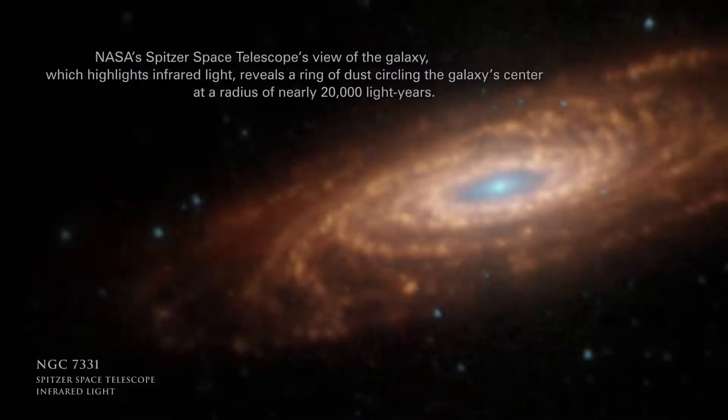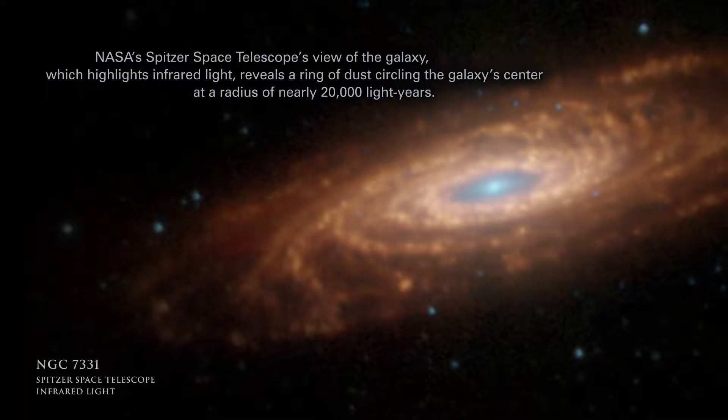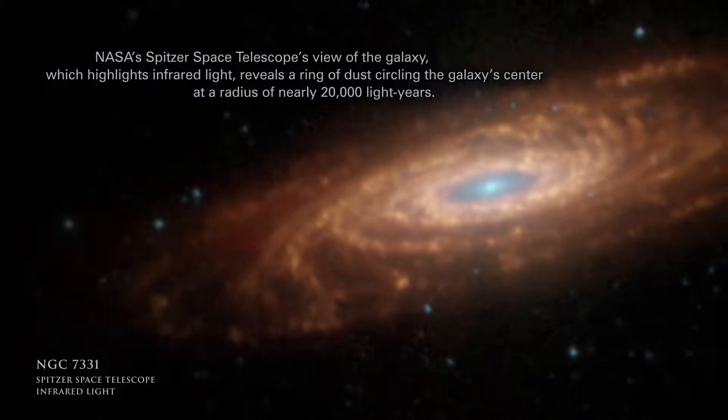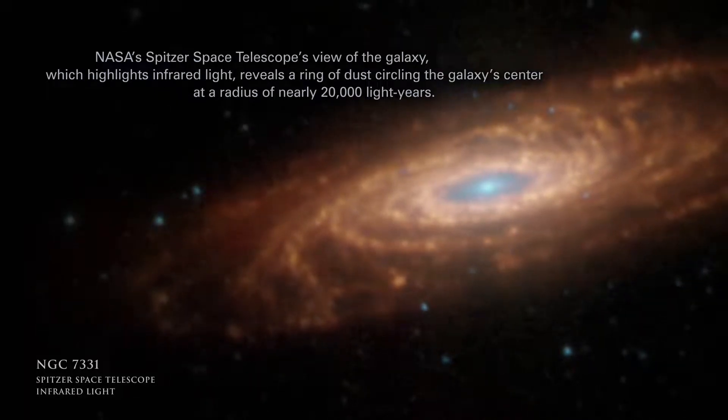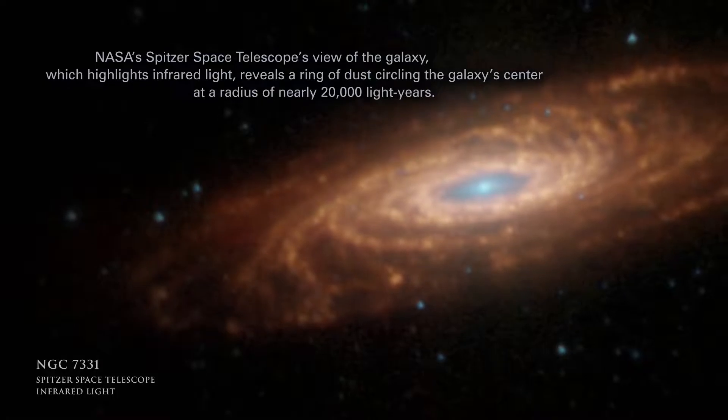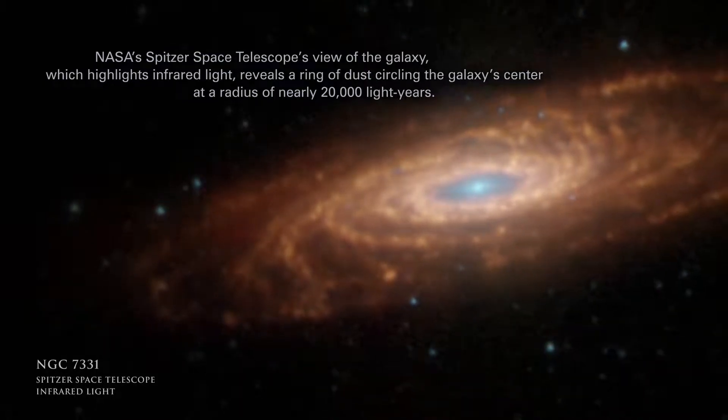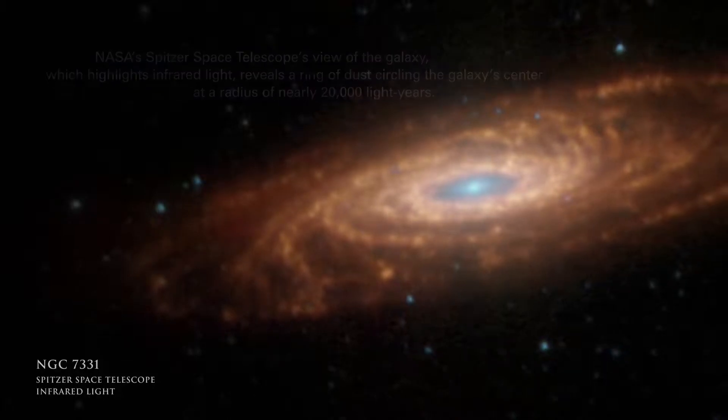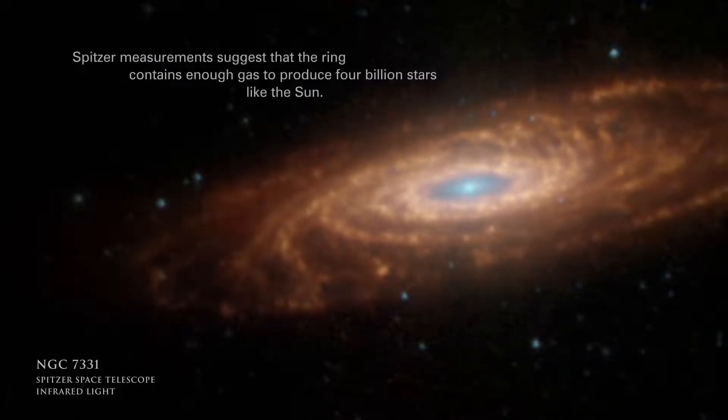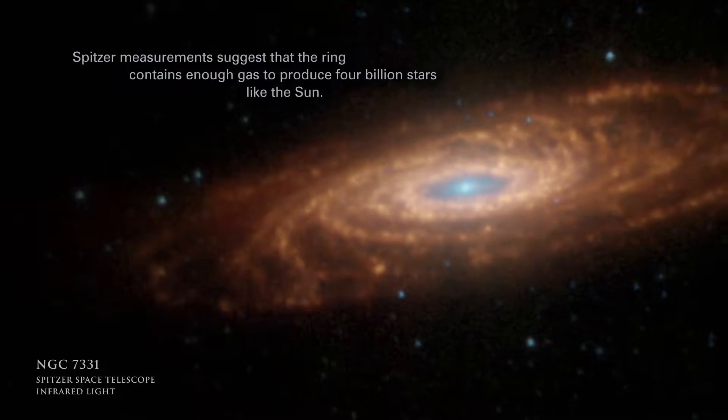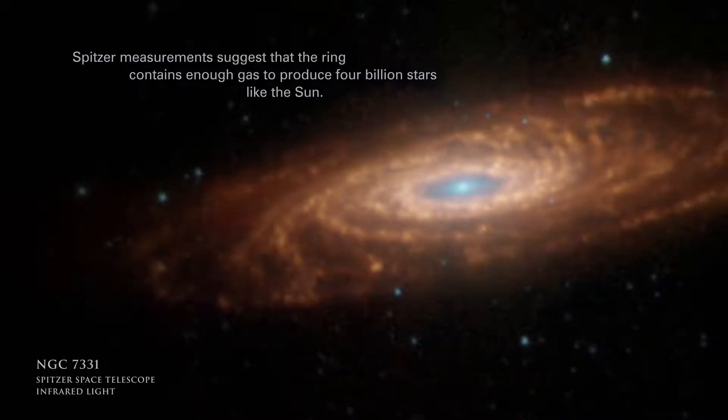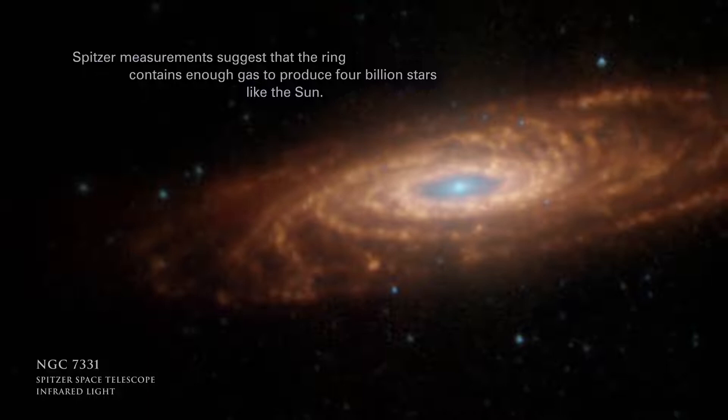NASA's Spitzer Space Telescope's view of the galaxy, which highlights infrared light, reveals a ring of dust circling the galaxy's center at a radius of nearly 20,000 light-years. Spitzer measurements suggest that the ring contains enough gas to produce 4 billion stars like the sun.